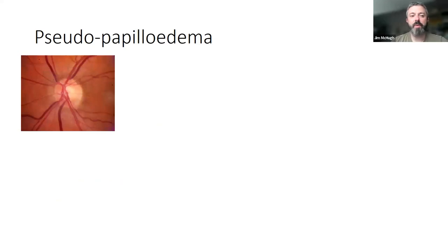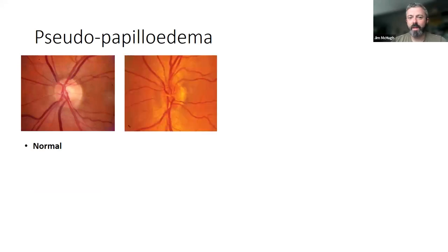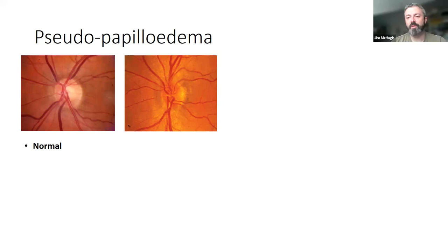I'm going to start with pseudopapilloedema because this is the thing which generates by far the greatest amount of work for us. Here's a normal disc. Any suggestions — what's going on with this disc? Why do I think it looks swollen, or why is it going to get referred to me as query swollen?